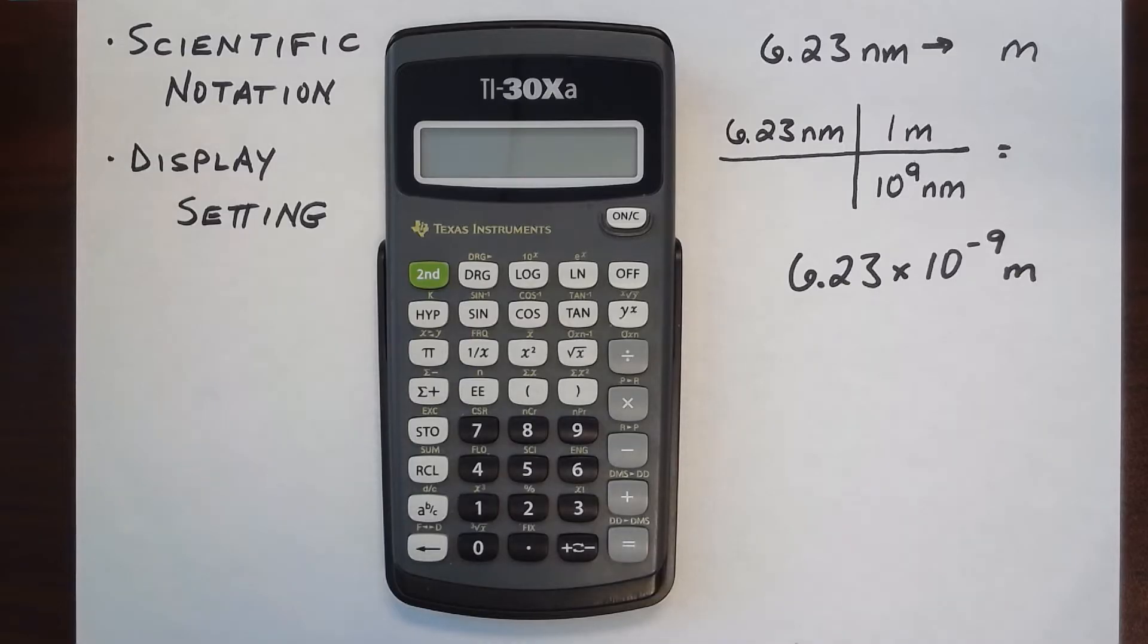First, to use the scientific notation, you want to find this button that's labeled EE. You don't want to use the 10 raised to the X or the E to the X button. These buttons do different things.